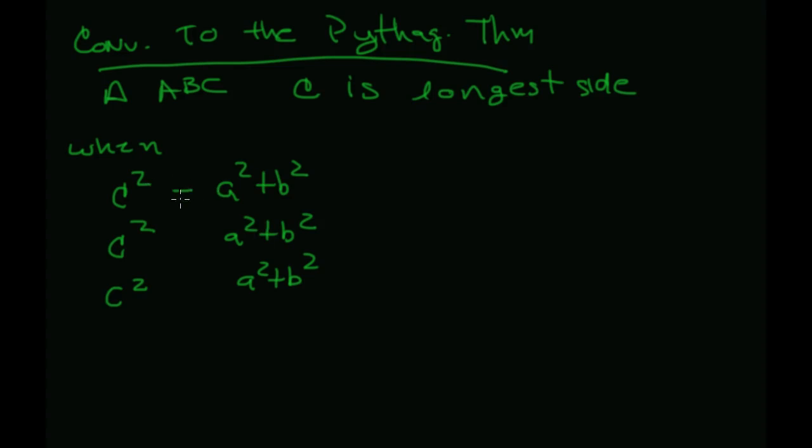When C squared is equal to A squared plus B squared, this is going to be a right triangle. Okay, that's exactly what we expect. If C squared is bigger than A squared plus B squared,